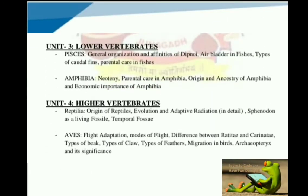Then we are going to discuss unit number 3. This unit's name is Lower Vertebrates. This unit has 2 classes: class Pisces and class Amphibia. In class Pisces, we study the general organization and affinity of Dipnoi, also called Lungfish. Then we discuss air bladder and Pisces, types of coelocanth, parental care, and Pisces. For class Amphibia, we study neoteny, parental care in Amphibia, origin and ancestry of Amphibia, and economic importance of Amphibia.